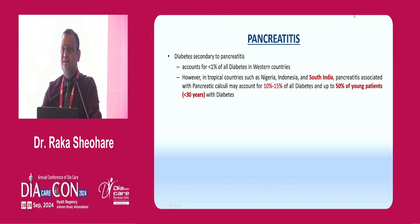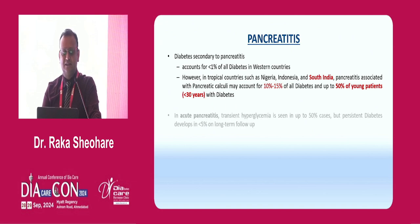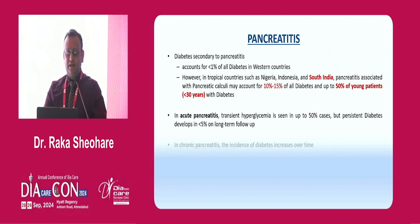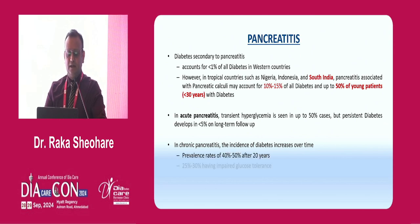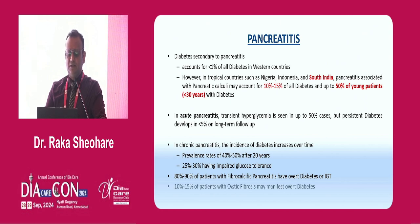Regarding pancreatitis: in Western countries it accounts for less than 1%, but in South India we are seeing many such patients. 50% of young patients under 30 years have this kind of diabetes. In acute pancreatitis, transient hyperglycemia is seen in 50% of cases. In chronic pancreatitis, the incidence of diabetes increases over time, and 25 to 30% have impaired glucose tolerance throughout life.